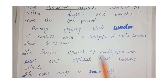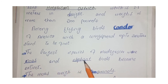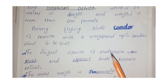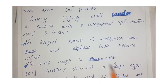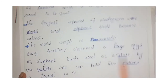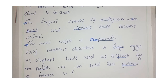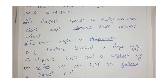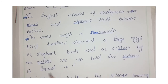The largest species of Madagascar — the moa and elephant birds — have become extinct and are no longer found. The moa weighed 520 pounds. Early travelers described the large eggs of elephant birds, which were used as flasks by the natives and could hold two gallons of liquid.